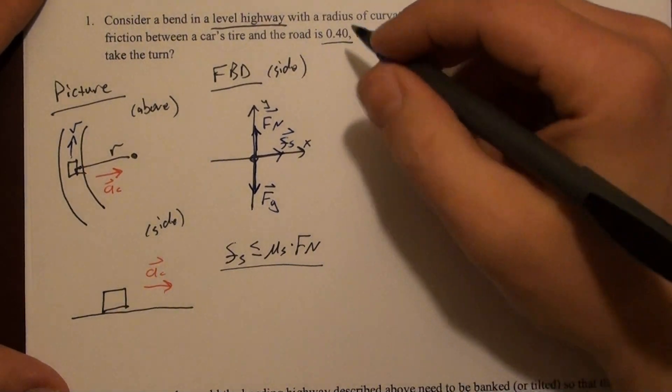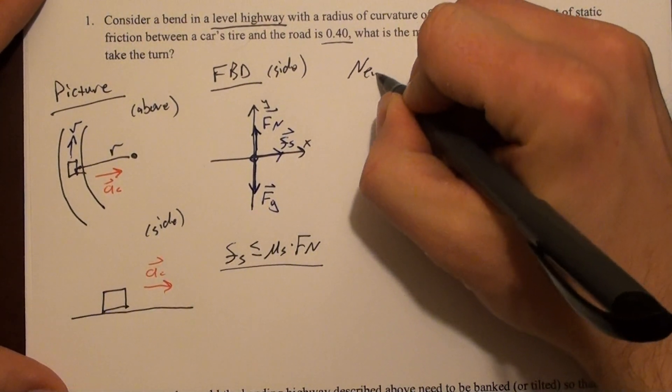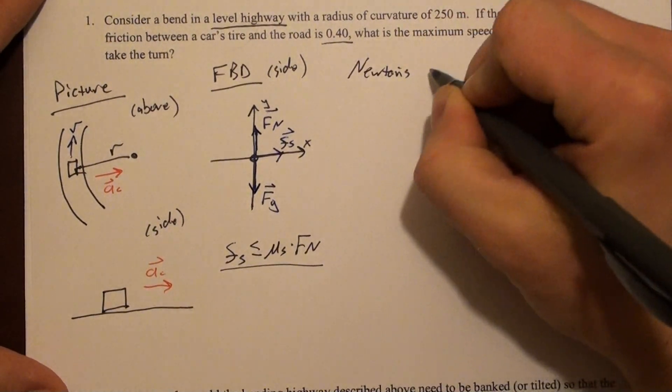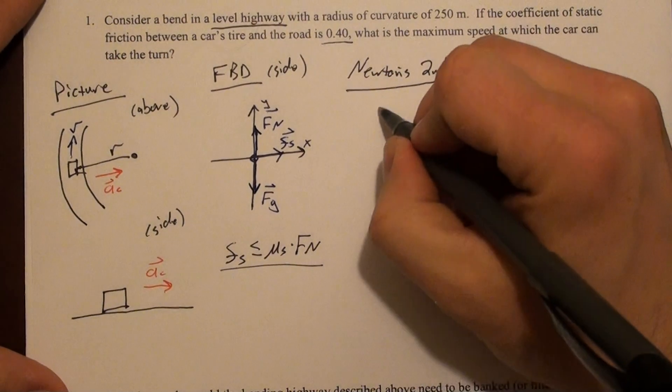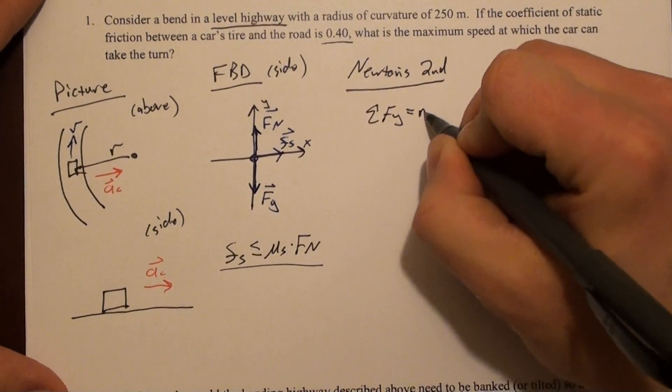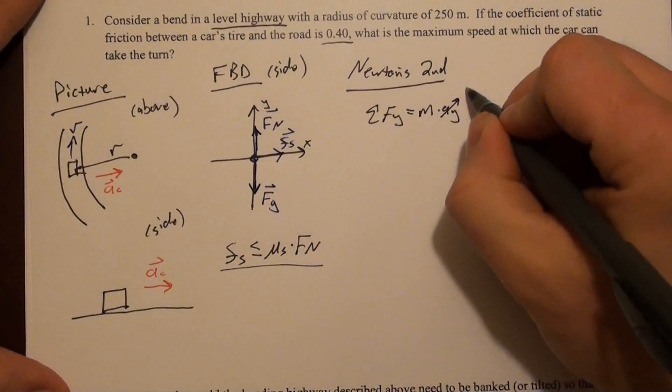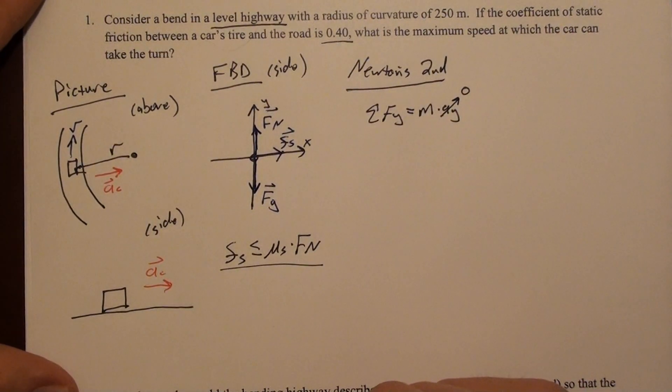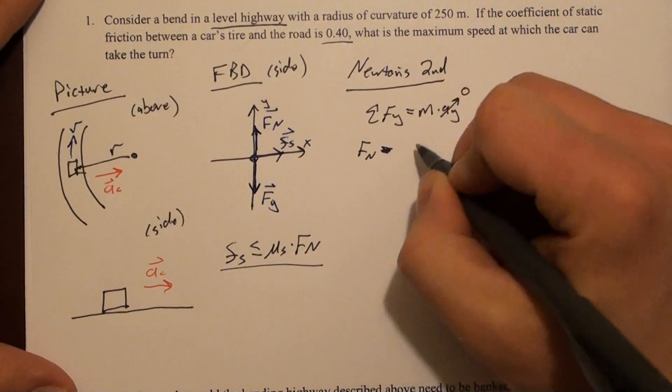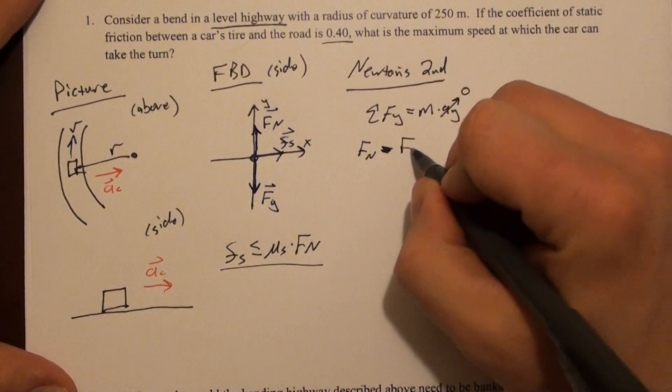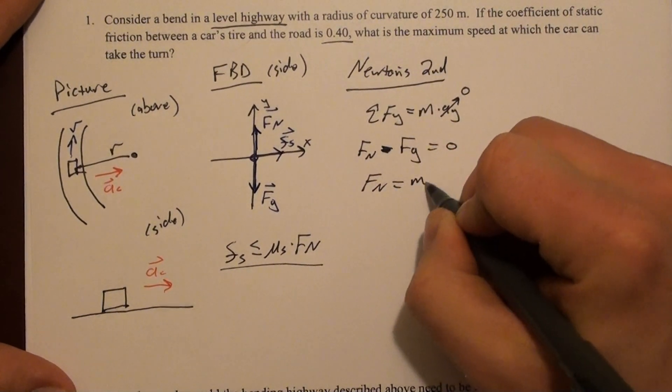We'll apply Newton's second law. Let's do it in the y-direction first. Newton's second law in the y-direction says there is no acceleration in the y-direction, so this is zero. That gives us that the normal force minus the gravitational force equals zero, or that the normal force equals mg.